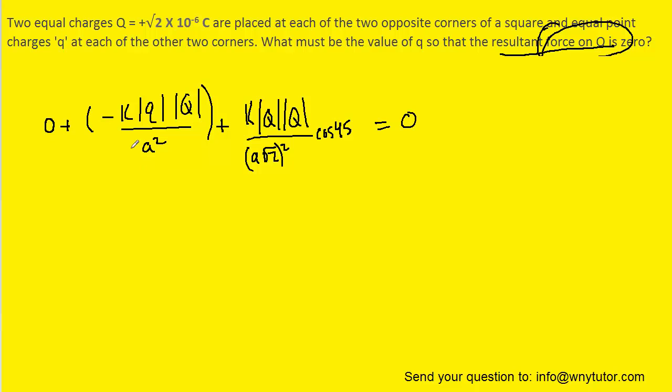Now, we're trying to solve for lowercase Q. Why don't we add this term right here over to the right hand side? We can do that because it's a negative term. So we'll add it over to the right. We can see that we have a factor of uppercase Q on both sides of the equation. So we can eliminate.